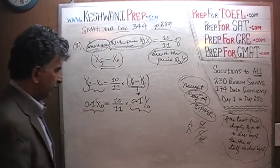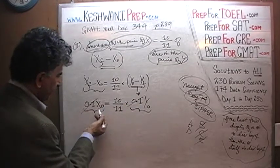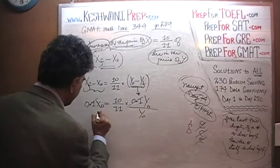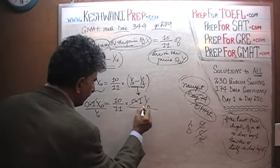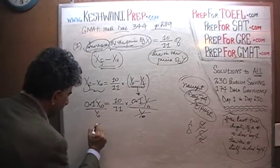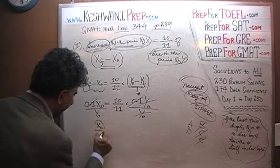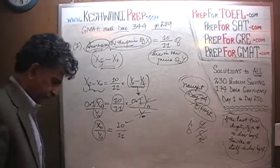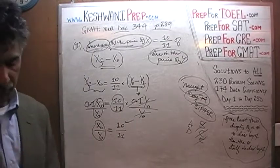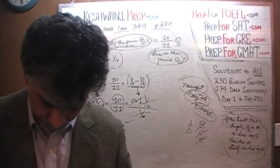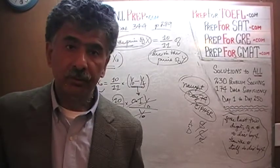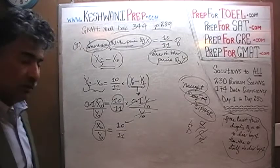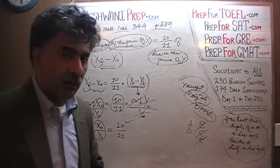Here we see 0.1 on both sides. Dividing both sides by Y-naught, the Y-naught terms cancel, and we end up with X-naught over Y-naught equals 10 over 11. That means Y-naught over X-naught equals 11 over 10 — same thing, just rearranged. So the second statement also gives us the ratio of the original prices. The second statement is also sufficient.